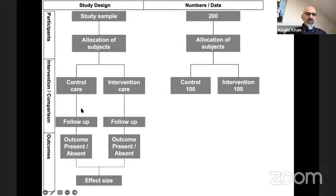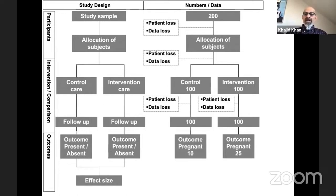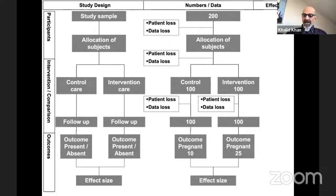As we know, patients are allocated by randomization to control or intervention, followed up for their outcomes, and then the effect size is calculated. Imagine 200 people are randomized with no patient or data loss — a hypothetical trial concerning infertility. In the control group 10 couples become pregnant out of 100, and in the intervention group 25 couples become pregnant out of 100 on follow-up. How will we calculate the effect size for meta-analysis?